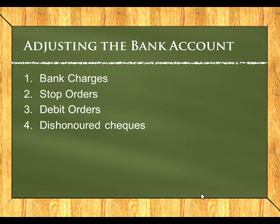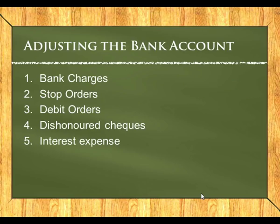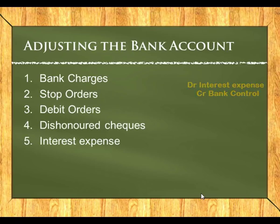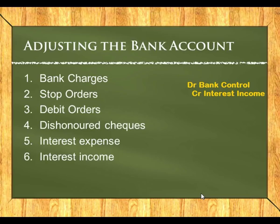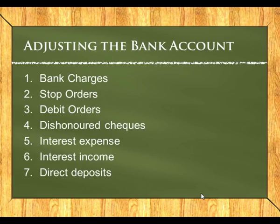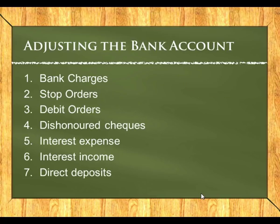For dishonored checks, it's money that was received from our debtors, so now we need to increase our debtors again. We would debit debtors control and credit the bank account. For interest expense, we would debit interest expense and credit bank. For interest income, we would debit our bank account and credit the relevant income account. For direct deposits, the debit would always sit on the bank account, and we would credit whatever account it relates to — for example, if it was money from a debtor we would credit debtors control, or if it was money for sales we would credit sales.